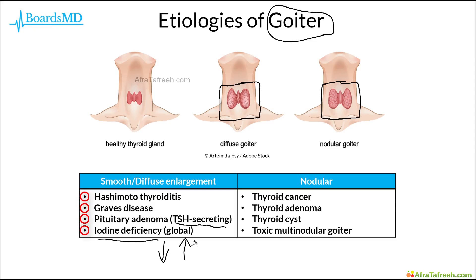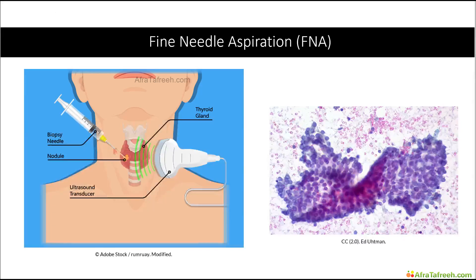In contrast, our nodular goiter differential diagnosis includes thyroid cancer, thyroid adenomas, thyroid cysts, as well as toxic multinodular goiter. One of the modalities used in the workup of thyroid nodules is the fine needle aspiration, or FNA, in which we use an ultrasound and then insert a needle in order to extract some cells from the thyroid.